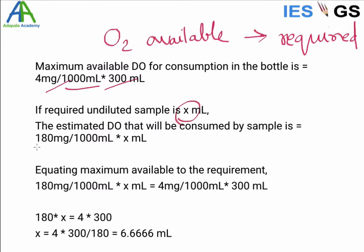So we can equate these two. Here we will get the value for x. What is x? It is the oxygen available, volume of the container, and the estimated demand. So we will get value 6.66, and this 6.67 ml is in our answer.